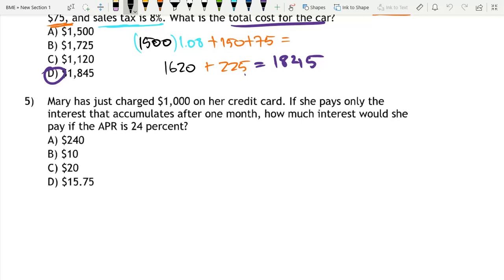Mary has just charged $1,000 on her credit card. If she pays only the interest that accumulates after one month, how much interest would she pay if the APR is 24%? In this case, we are calculating simple accumulated interest and we have a video on this. It's simple interest because we're paying interest off of the principal.